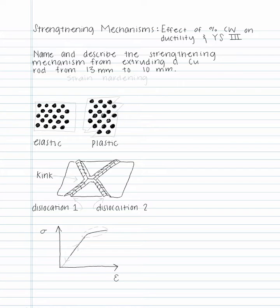This problem is about strengthening mechanisms, specifically the effect of percent cold work on ductility and yield strength. Name and describe the strengthening mechanism from extruding a copper rod from 13 millimeters to 10 millimeters.